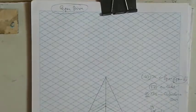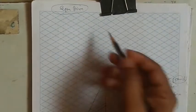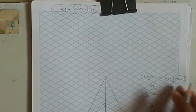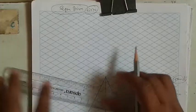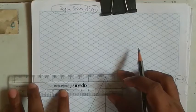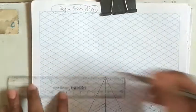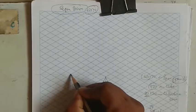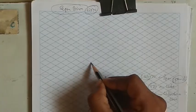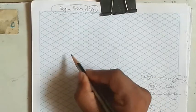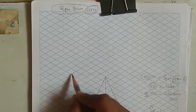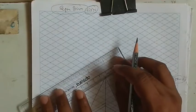First we'll construct the square prism, then we'll see how to add the hole. The side is 40 and height is 70. To start, we take one horizontal line and from any one corner mark out the base of 40 — so we get four corners of the square base. Let's draw that with a thin line.